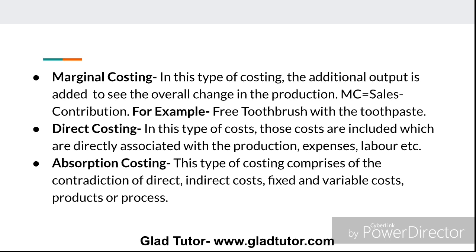The next type of technique is marginal costing. In this technique of costing, an additional output is added to see the overall change in production. In marginal costing, we add an additional product to increase the total output. For example, in marketing, a toothpaste may come with a free toothbrush. If a new product is entering the market, you make it more attractive by bundling.